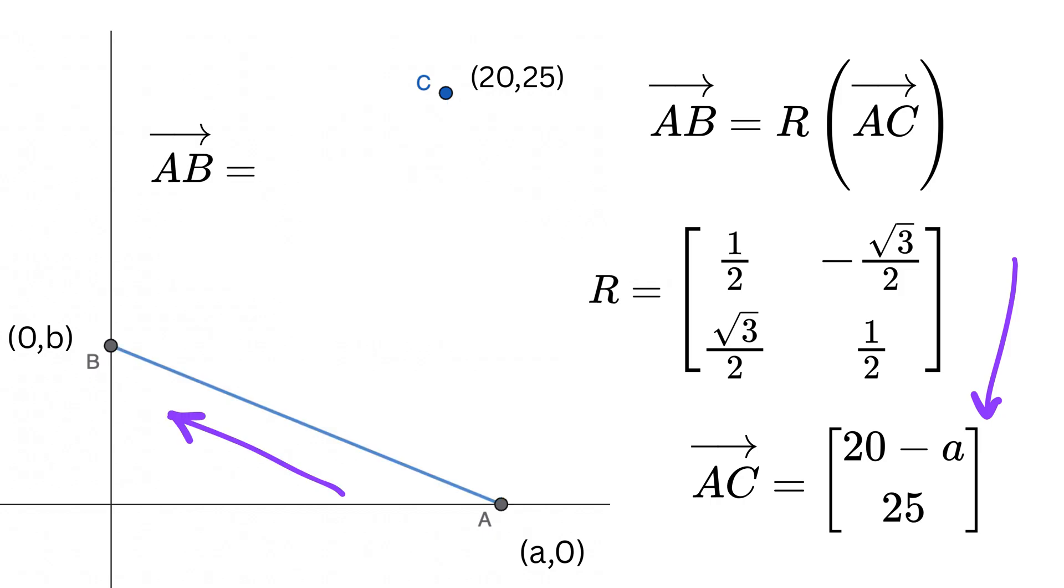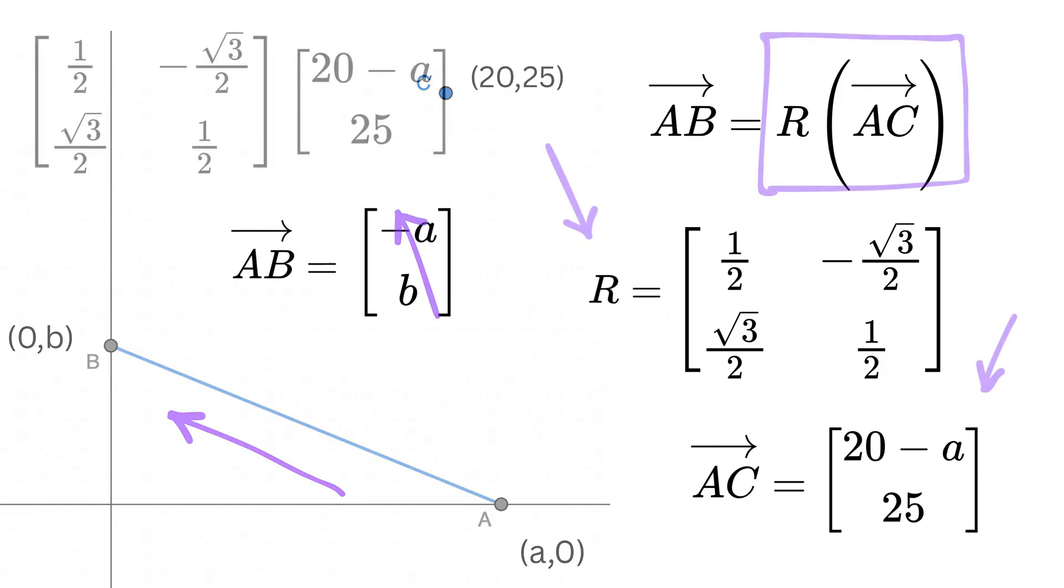Similarly, AB equals B minus A, which is (0,b) minus (a,0), which equals (-a, b), and we can write it as this vector.